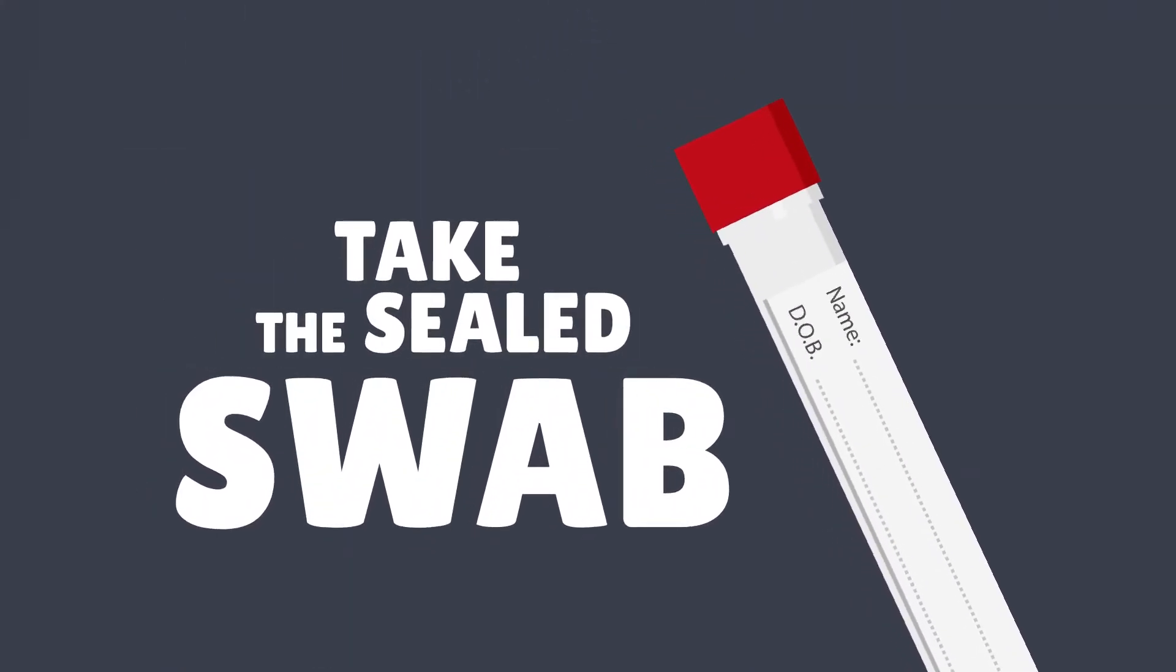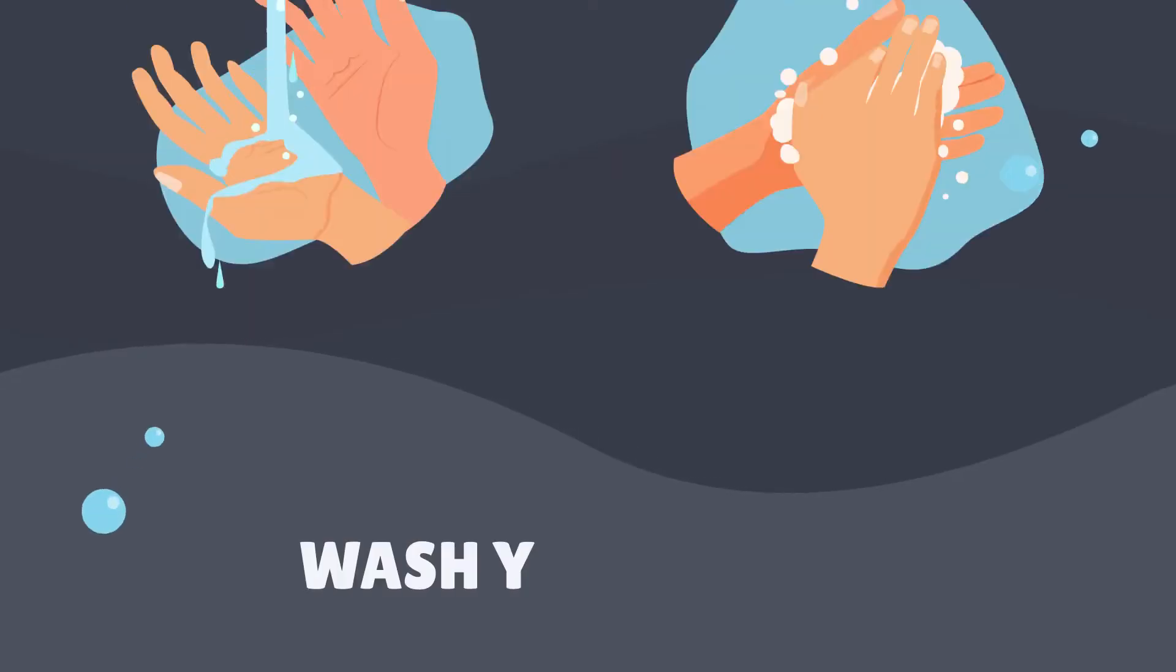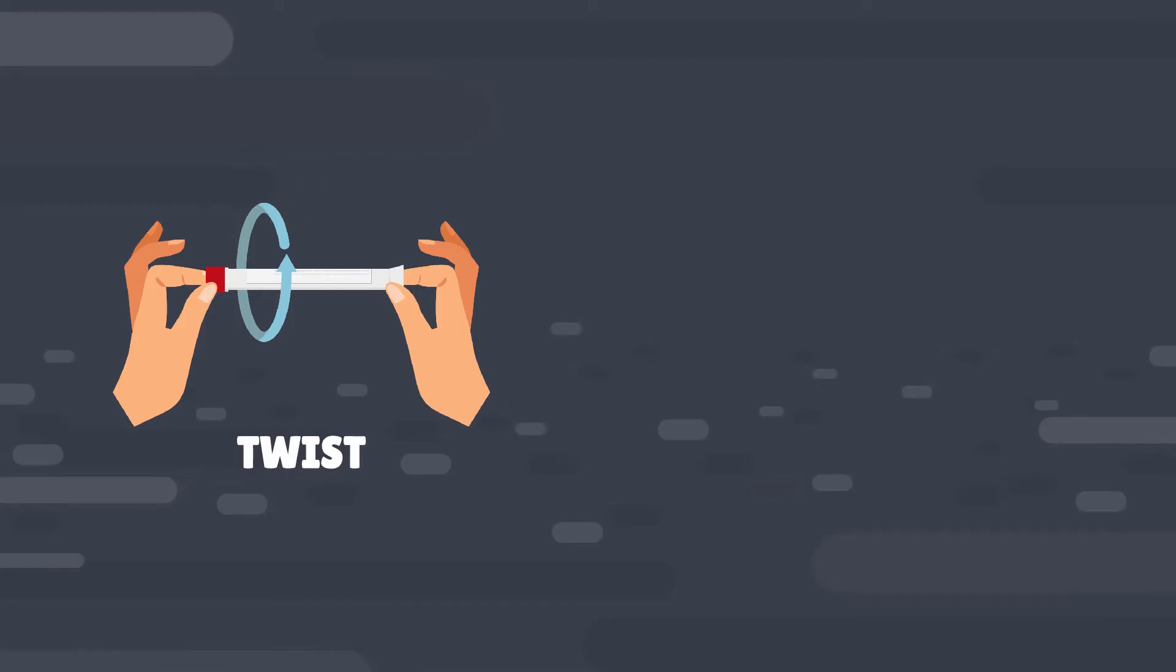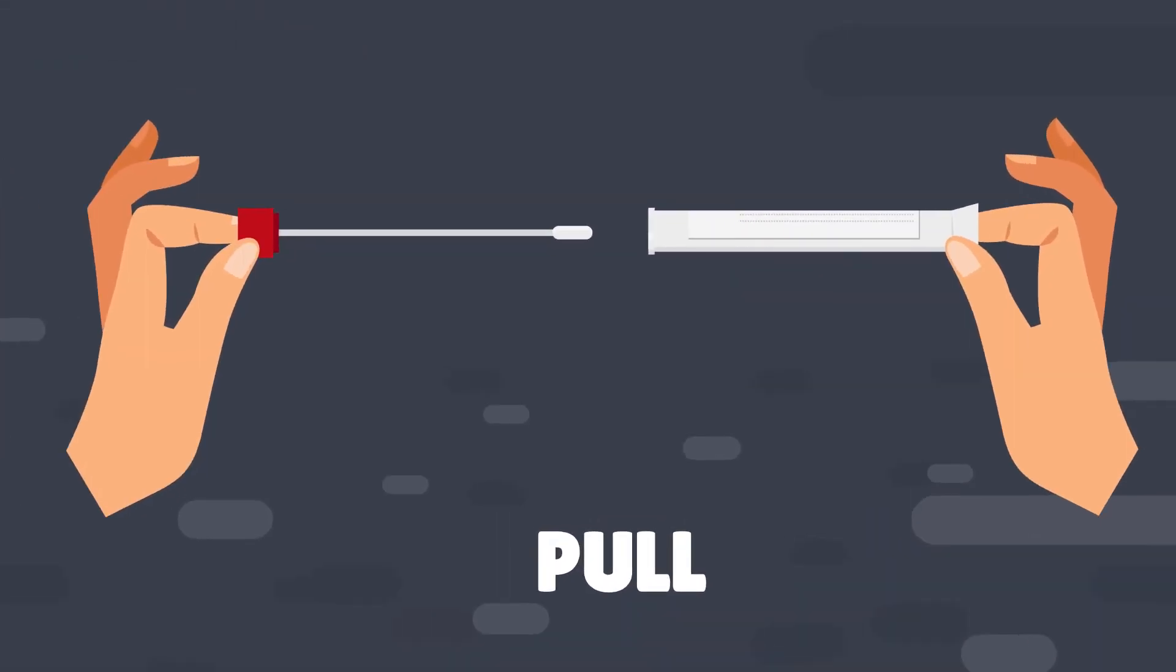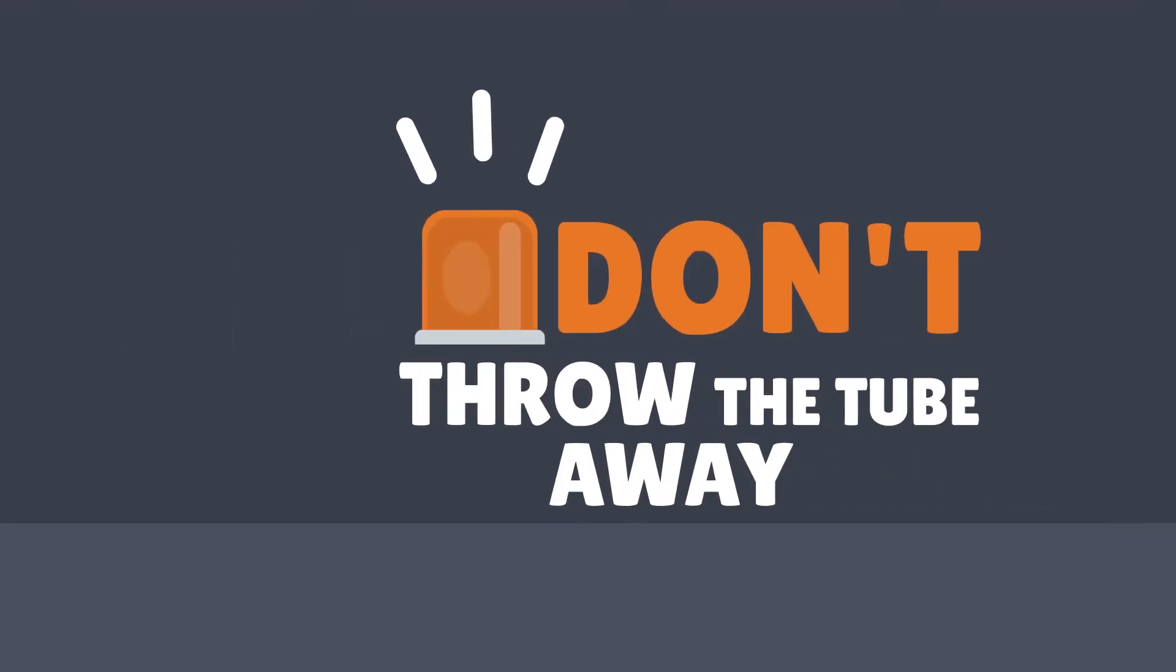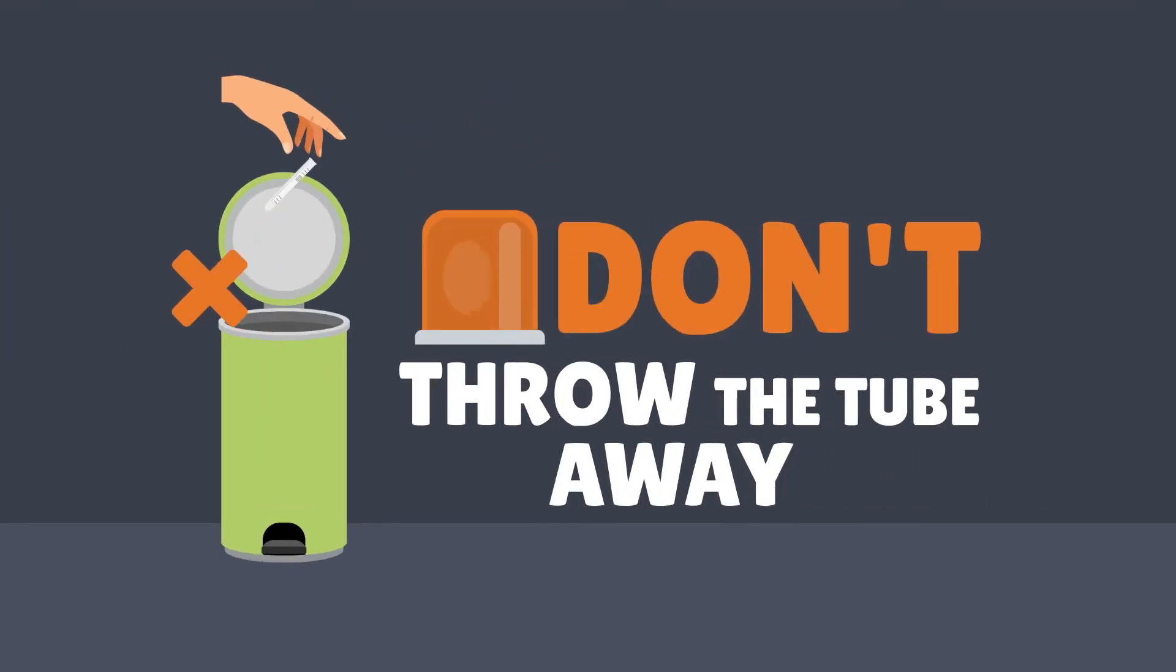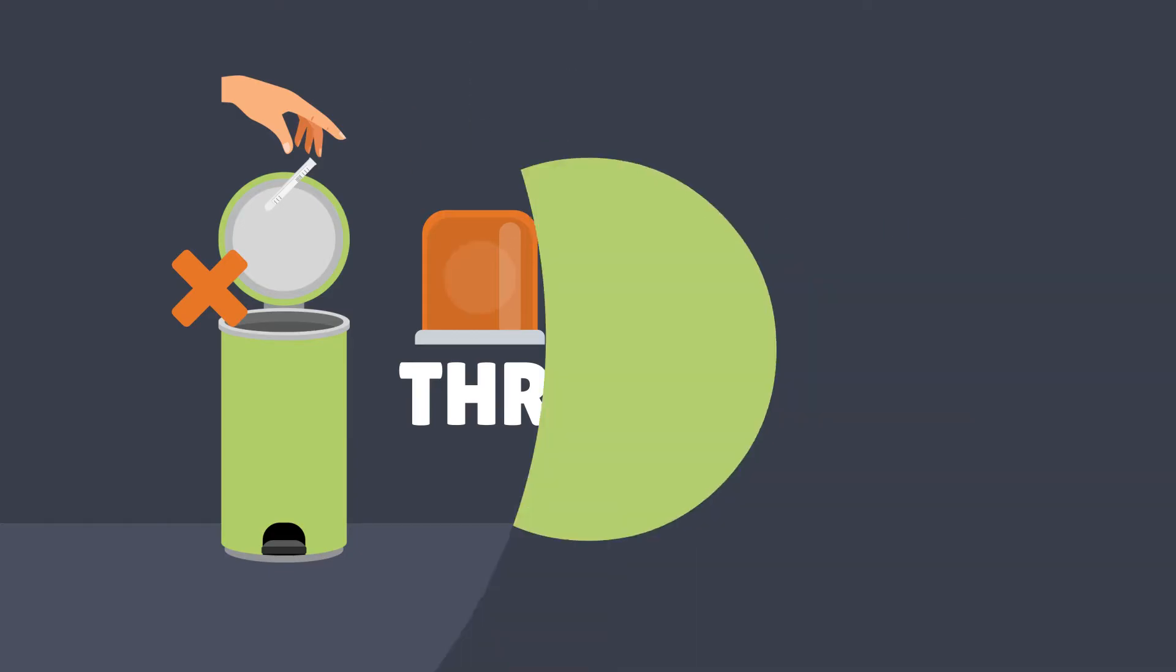Step 2. Wash your hands and open the swab. Twist first to break the seal, then pull. The swab is attached to the cap and stays attached. Remember, don't throw the tube away. You'll put the swab back in after you've collected your sample.